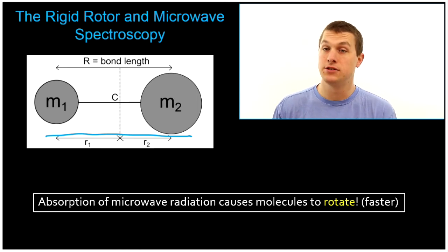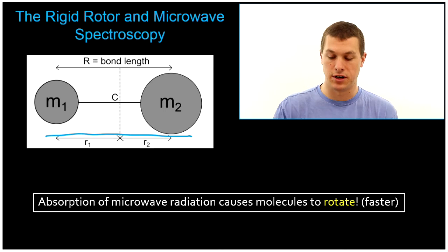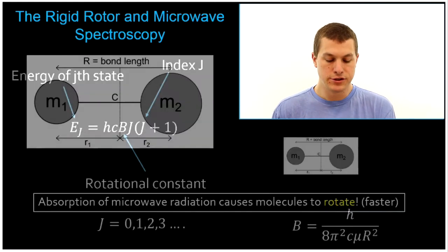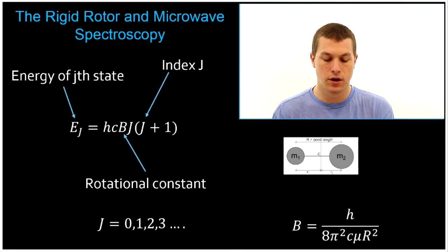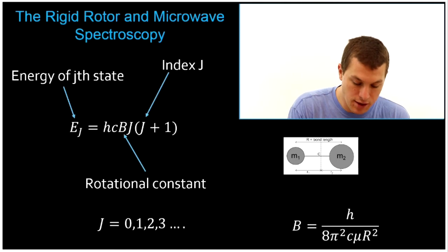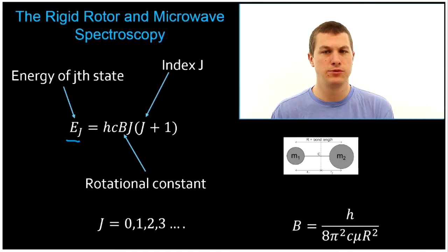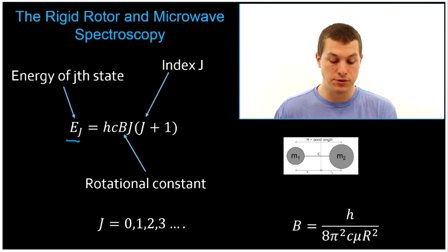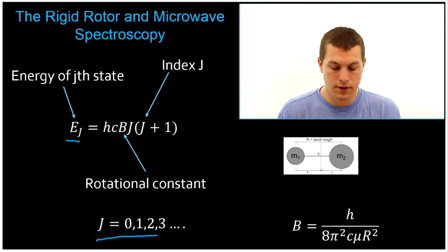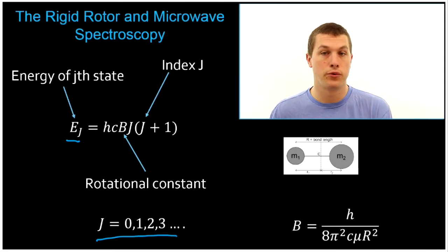Let's take a look at the energy eigenvalues for the rigid rotor. This is what we're going to use to think about our microwave spectroscopy. So this is our equation for our energy eigenvalues for our rigid rotor. It's just like your energy eigenvalues for your harmonic oscillator or your particle in the box. We have the energy of the jth state. In this case we use j instead of n, but the idea is the same. We're just labeling every single successive energy level, and we use j. In this case j can run from 0, 1, 2, 3, up to infinity.